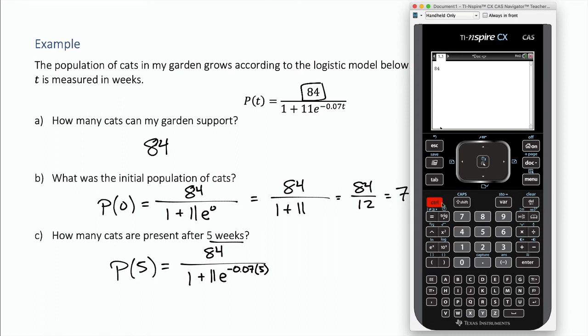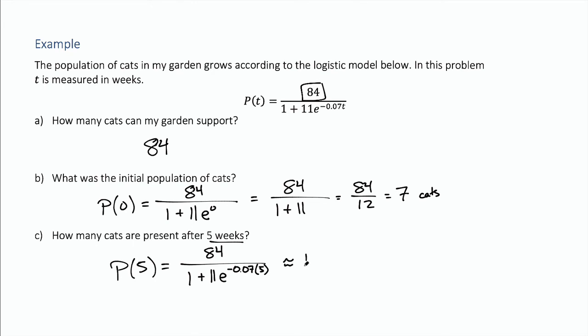And go ahead and control enter. Now this is talking about number of cats and it doesn't really make sense for us to have a decimal number of cats. We can only have a whole number of cats here. So the nearest whole number here would be 10. Round to the nearest whole number would be about 10. So only about 10 cats after five whole weeks.